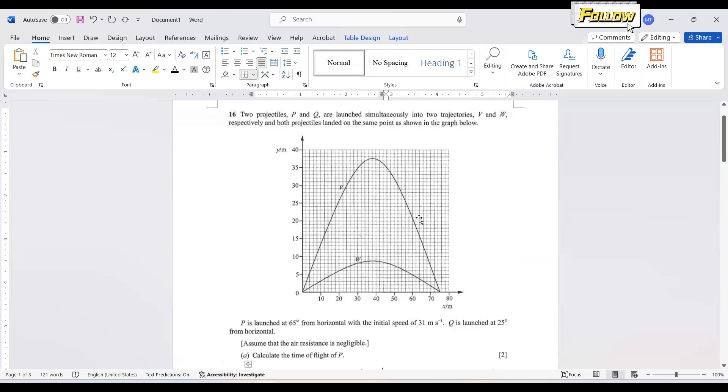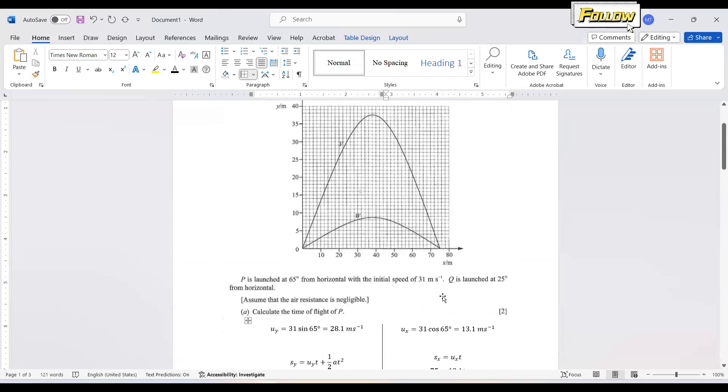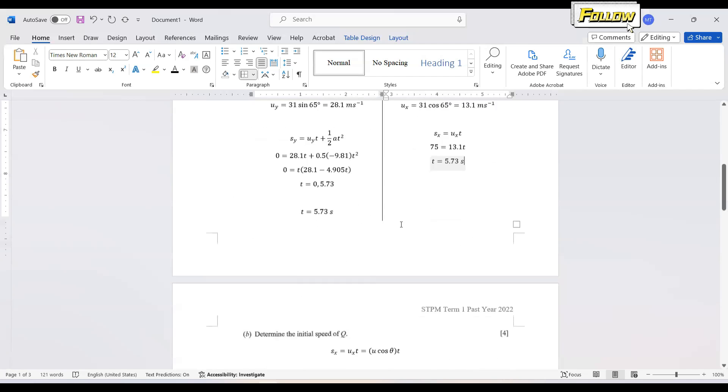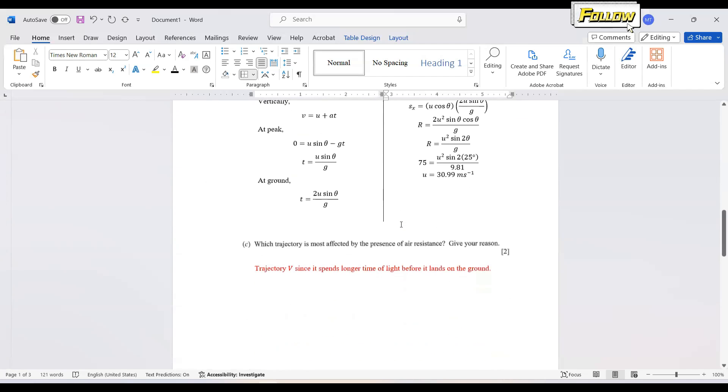So this would give a different scenario, give a different result that we can expect that P should have longer time of flight. So you can do the calculation yourself to get the time of flight for W and you will find it is actually shorter than the trajectory V.